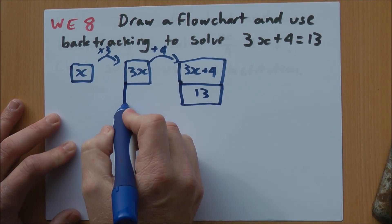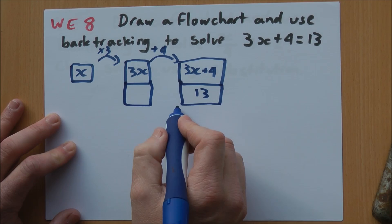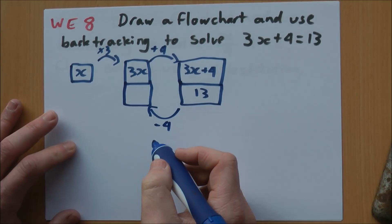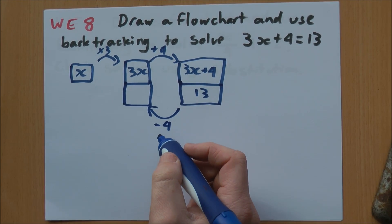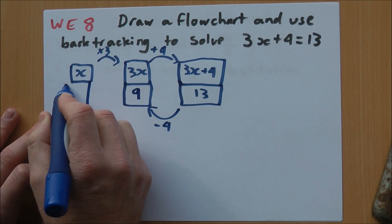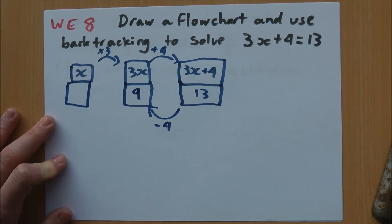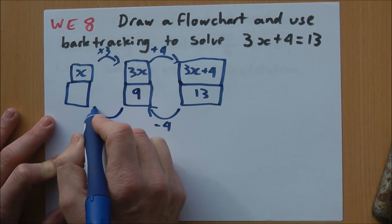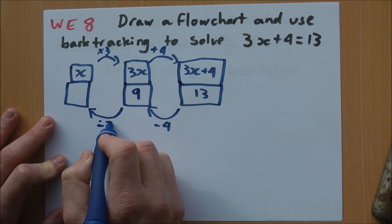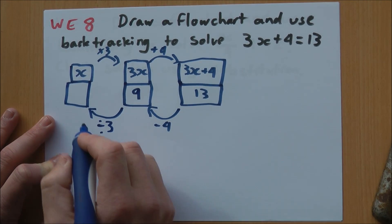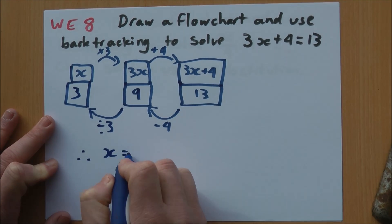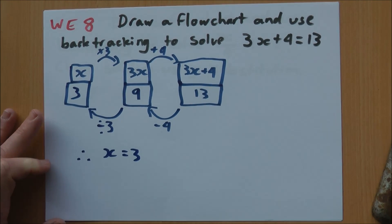Let's work backwards. If that's a plus 4, the inverse of that would be minus 4. 13 minus 4 is 9. This is the box I need to get my solution for x. Times 3 is what I had, because that's x times 3. The inverse, divide by 3: 9 divided by 3 is 3. Therefore x equals 3. That is my solution to the equation.